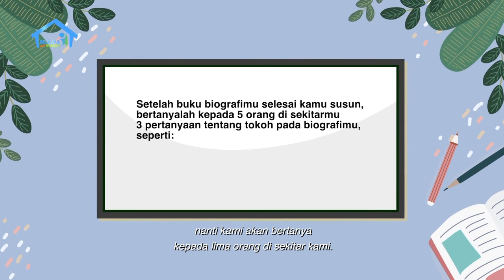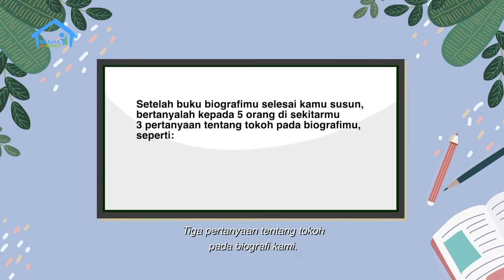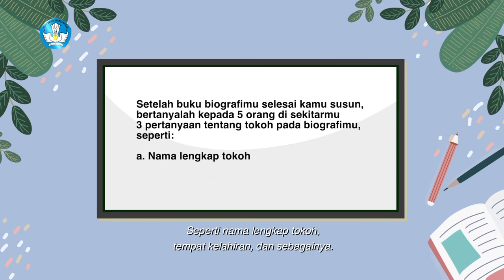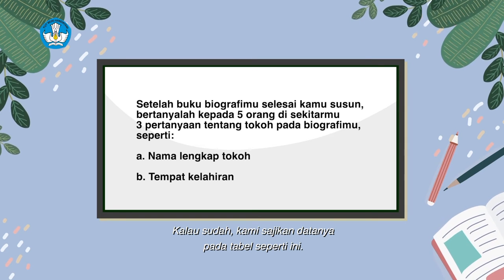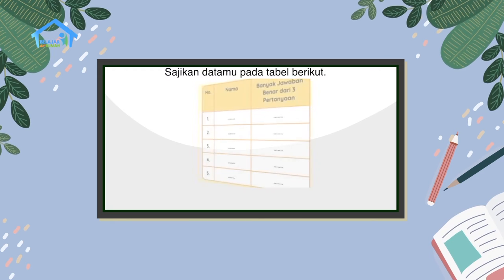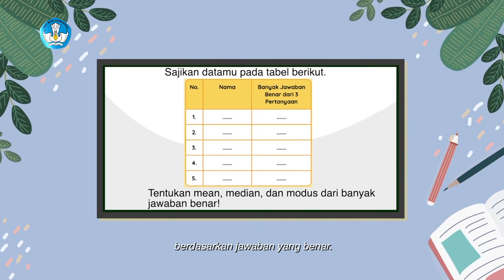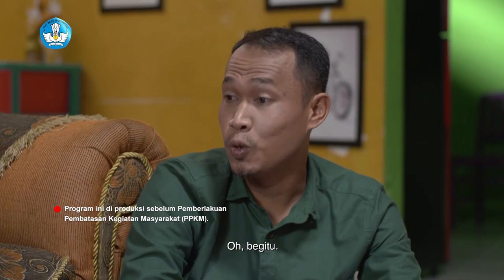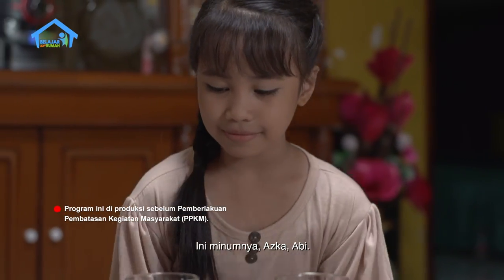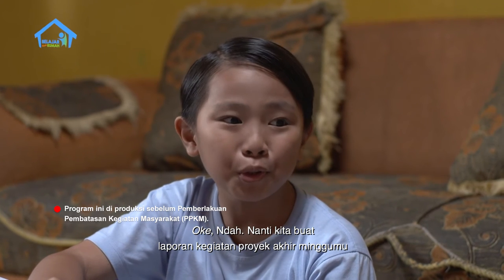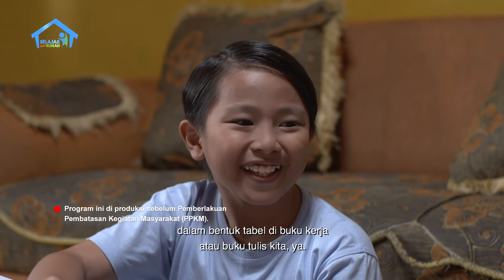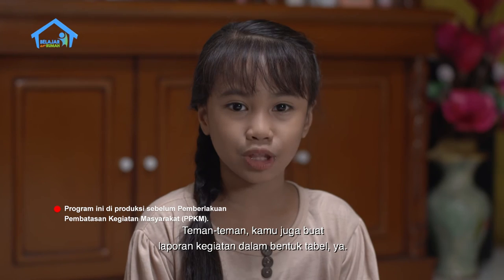Setelah buku biografinya selesai disusun, nanti kami akan bertanya kepada lima orang di sekitar kami, tiga pertanyaan tentang tokoh pada biografi kami, seperti nama lengkap tokoh, tempat kelahiran, dan sebagainya. Kalau sudah, kami sajikan datanya pada tabel seperti ini. Setelah itu kami tentukan min, median, dan modus berdasarkan jawaban yang benar. Dalam bentuk tabel di buku kerja atau buku tulis kita ya. Teman-teman, kamu juga buat laporan kegiatan dalam bentuk tabel ya, seperti ini.